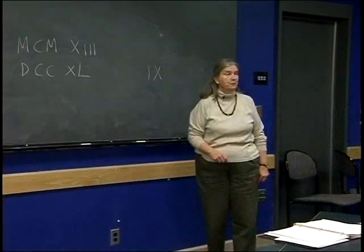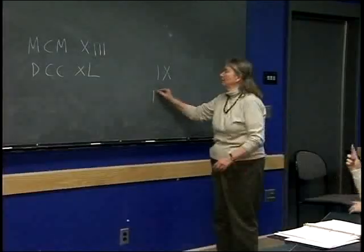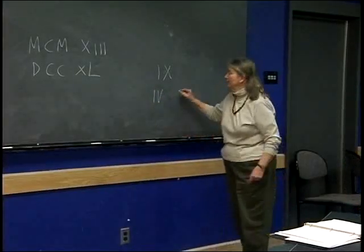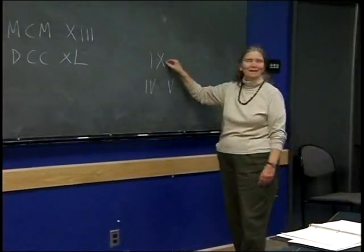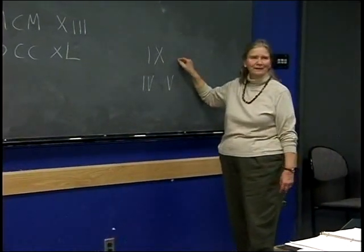What number when you take one away becomes one more? Four, yeah. Nine. Four? And nine. Because if you write four and you take one away, you get nine. And if you have nine and you take one away, you get ten.